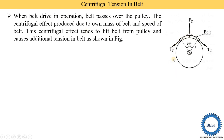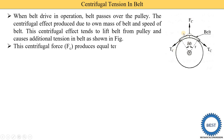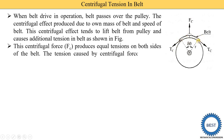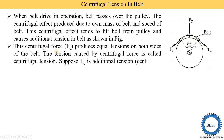In this diagram, the circular part is the driving pulley, this is the center, and this part is the belt. Here only a certain part of the belt is shown. Due to centrifugal force, the belt tries to move away from the pulley, and due to centrifugal force some centrifugal tension is produced on the belt. This centrifugal force Fc produces equal tension on both sides of the belt. The centrifugal tension is denoted by Tc.